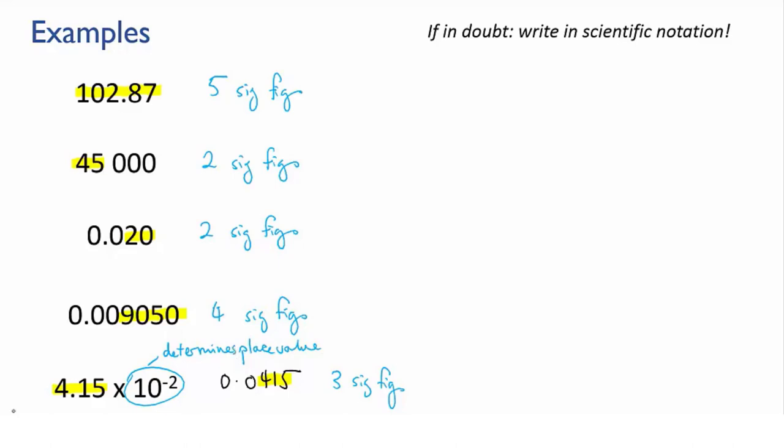And this leads me to a useful tip. If you're ever in doubt about sig figs, convert to scientific notation. Scientific notation gets rid of non-significant digits. The first part of the number shows you all the sig figs, and the second part just adjusts the place values.